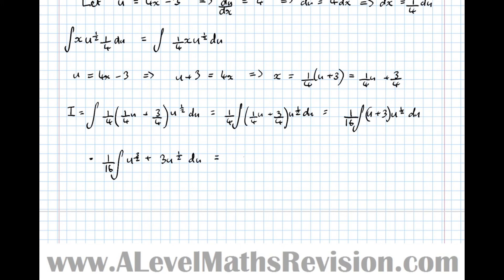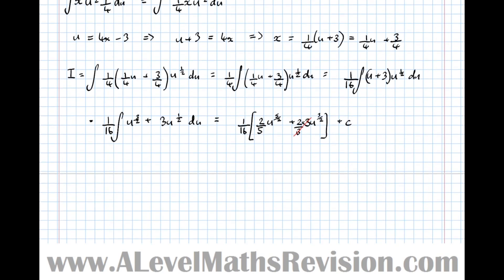And now we're ready to do the integral. Equals 1 16th, so u to the 5 over 2, add 1 to the power, divide by the power, so dividing by 5 over 2 is the same as multiplying by 2 fifths, plus 3 u to the 3 over 2, add 1 to the power, times by 2 thirds. So we can see here, this can be made a little bit simpler by doing 3 divided by 3 first, by cancelling the 3's, plus c.